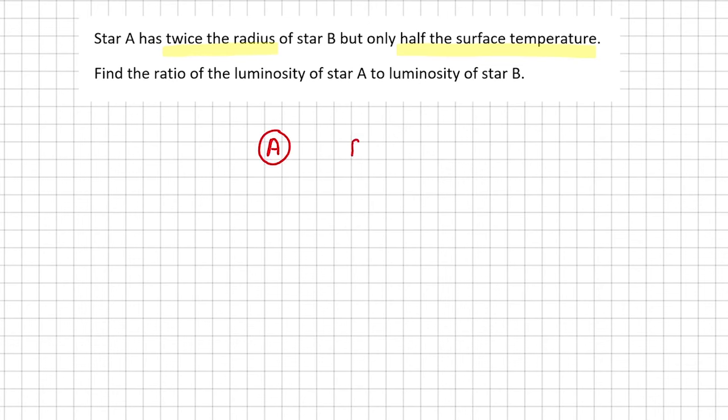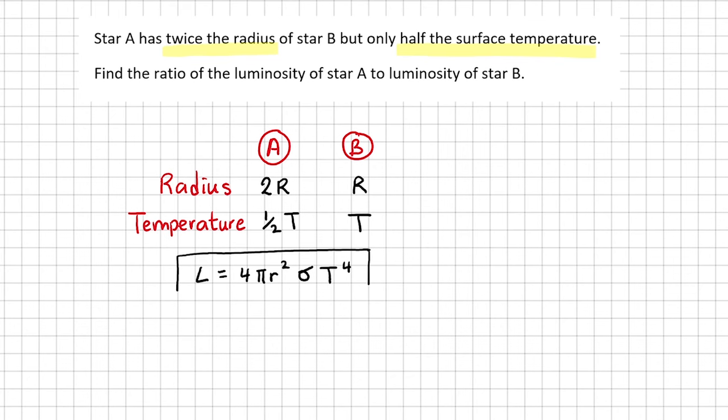For star A, the radius is twice the radius of star B. So if I let the radius of star B be capital R, then the radius of star A must be 2R. If I let the temperature of star B be T, then the temperature of star A is half of T. We can now use the luminosity equation to write down the luminosity of these stars.